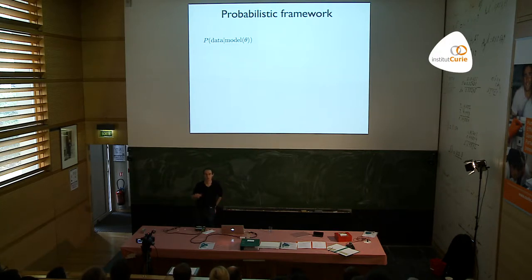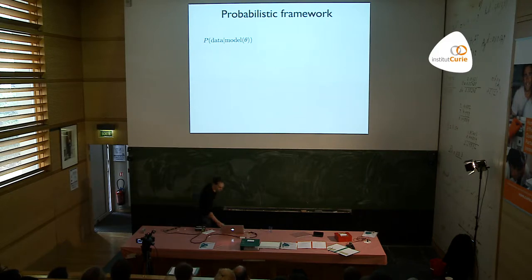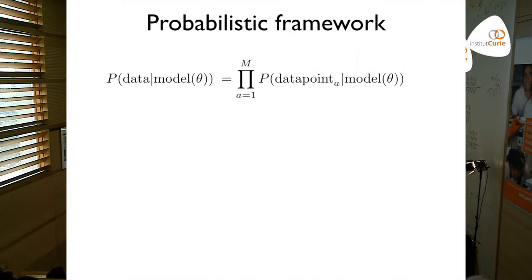Now, typically when you do experiments you do several experiments and collect several data points. So you have a collection of data points alpha going from 1 to M — you have M data points — and M will be an important parameter determining how well you sampled your model. If you assume that your experiments are independent of each other, meaning the experimental error is independent from one assay to the next, then you can factorize this probability distribution and it's just the product of the probability of getting a given data point given the model.